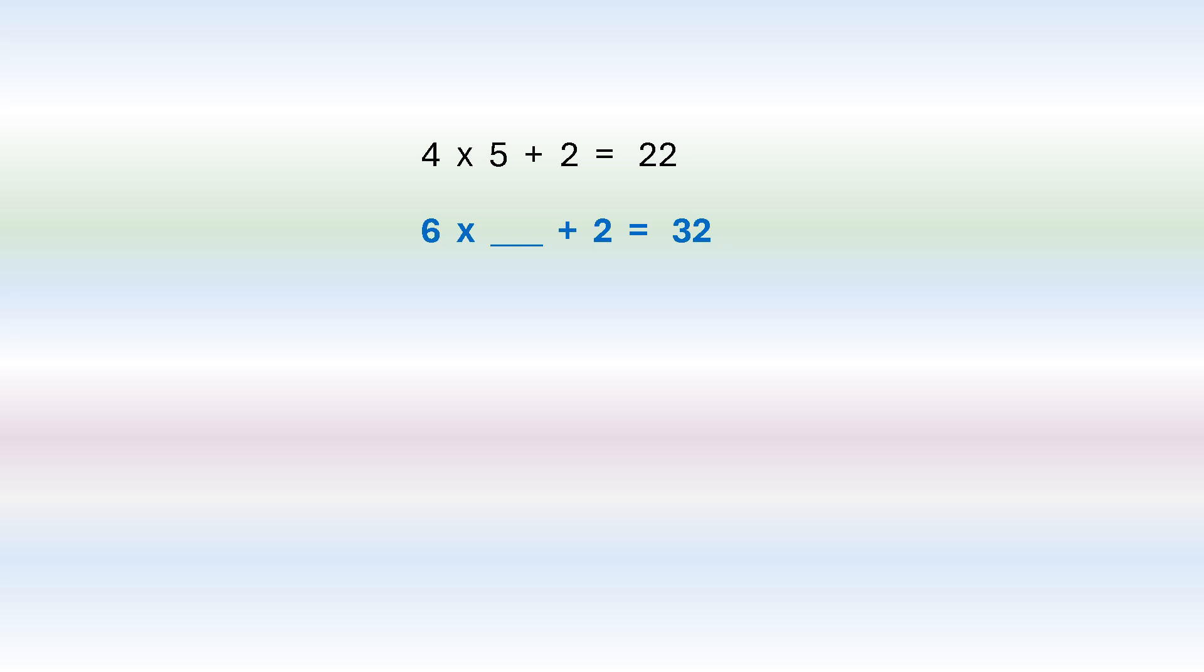So we're going to work in reverse. We're going to say 32 subtract 2 is equal to 30. 30 divided by 6 is equal to 5. So the missing part is 5. Let's try it again. So we're going to say 42 subtract 2 is 40. 40 divided by 8 is 5. And that's how we solve for the missing part.